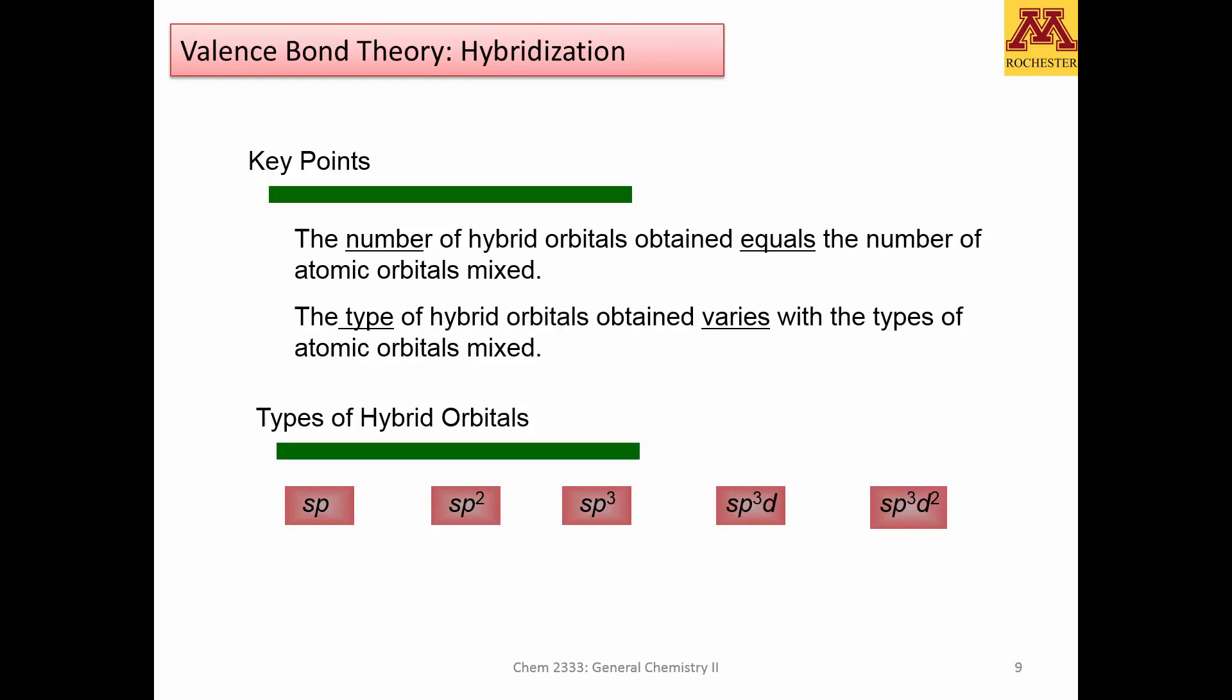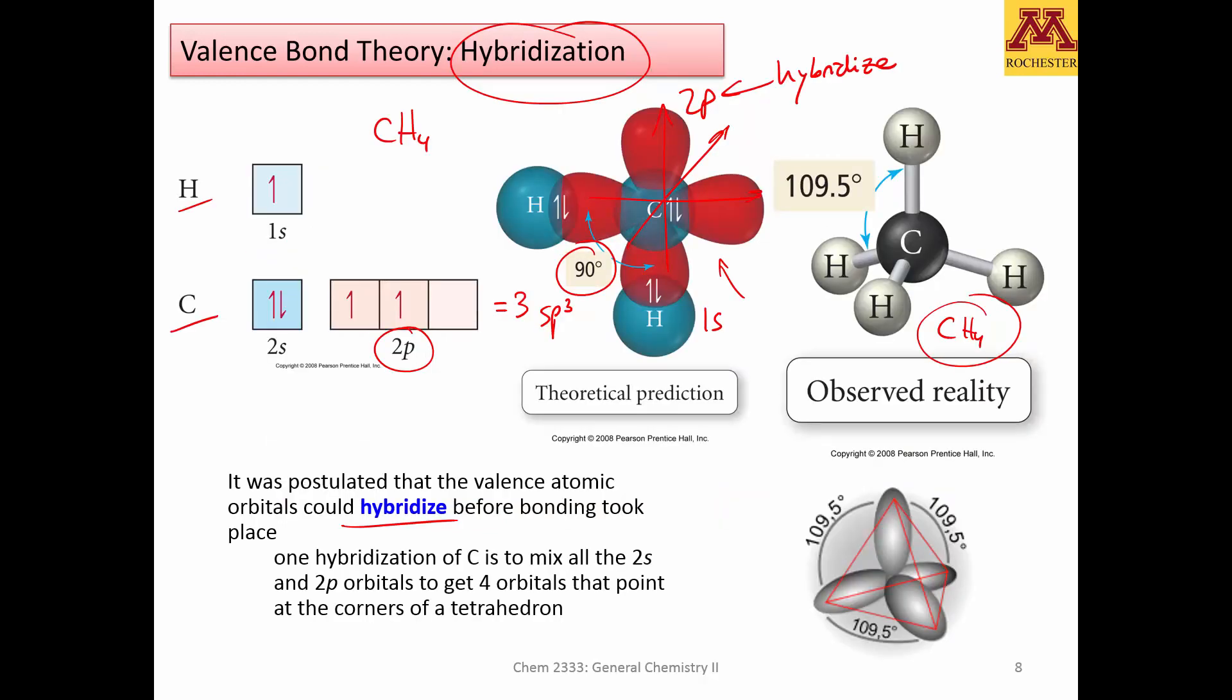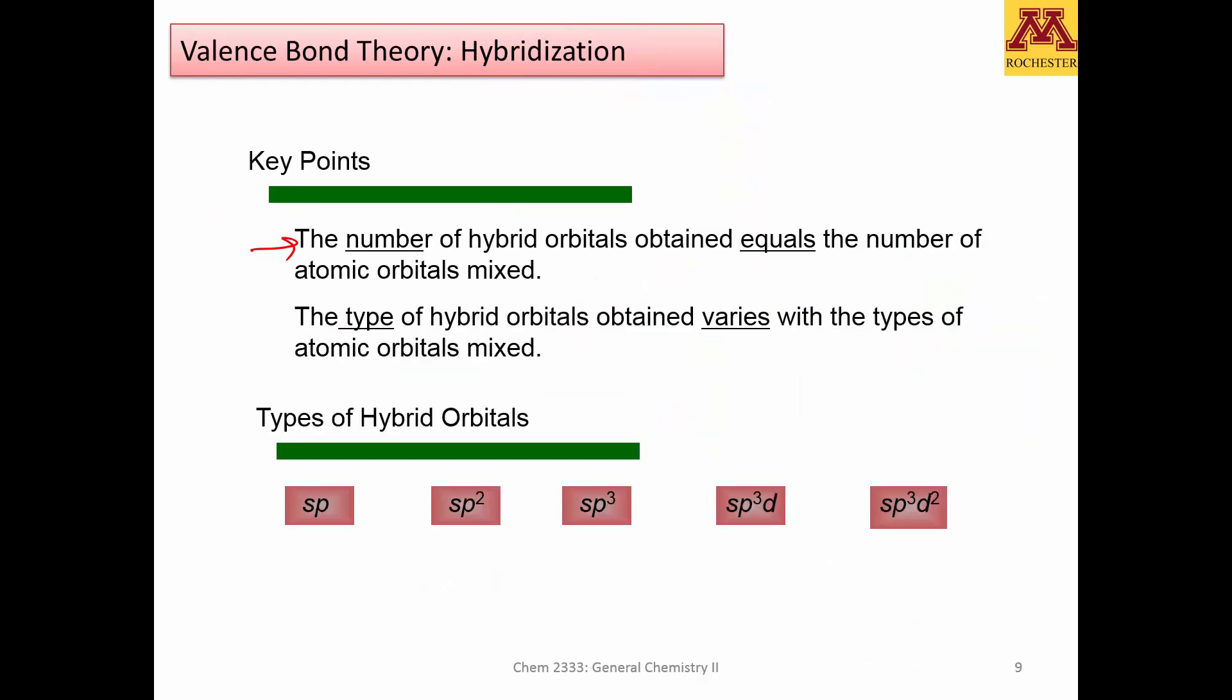So the main key points is that the number of hybrid orbitals obtained equals the number of atomic orbitals that you use to make that mixture. And the type of hybrid orbitals obtained varies with the types of atomic orbitals mixed. So if you are mixing these, they will have a different shape and energy than if you are mixing p's.